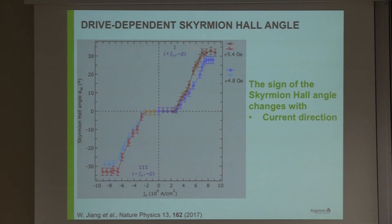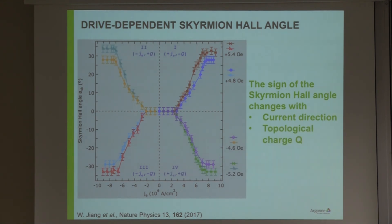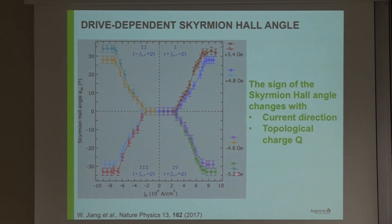If we change the current direction we get the mirror image of that data. We can go further by changing the topological charge by applying negative fields, giving us all four quadrants of a plot mapping all different combinations of topological charge and current direction. In all cases we get similar values for the saturation skyrmion Hall angle and similar values for the critical current as well.